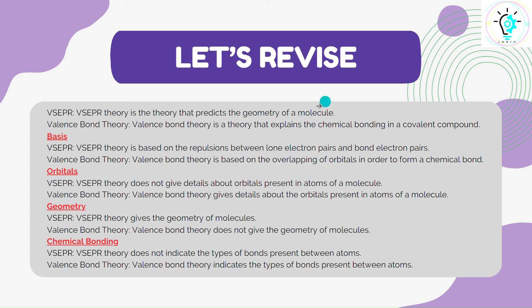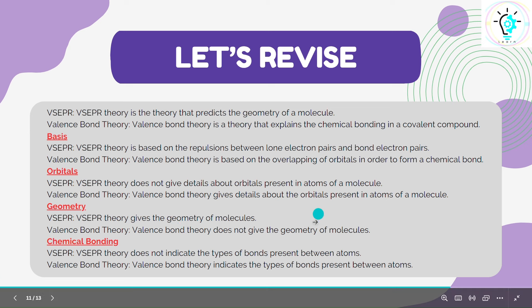To revise: VSEPR theory predicts the geometry of a molecule; VBT theory explains the chemical bonding. VSEPR theory is based on repulsions of lone pairs and bond pairs; VBT is based on overlapping of orbitals. VSEPR does not give details about orbitals; VBT gives details about the orbitals present. VSEPR gives the geometry of molecules; VBT does not speak about the geometry of molecules. VSEPR does not indicate the type of bond present between atoms; VBT, however, indicates the type of bond between atoms.